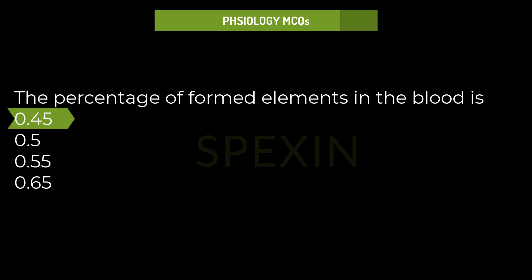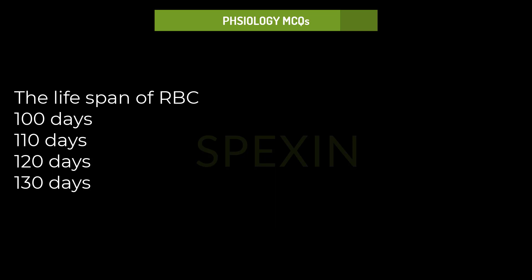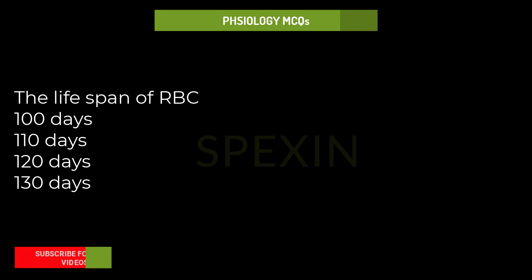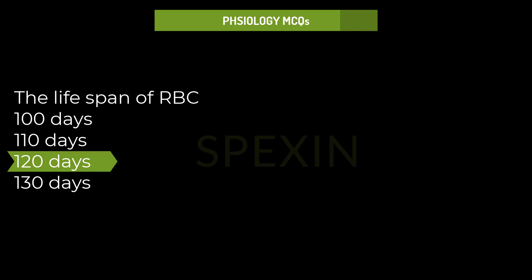The percentage of formed elements in the blood is: 0.45, 0.5, 0.55, 0.65. Correct answer: 0.45.